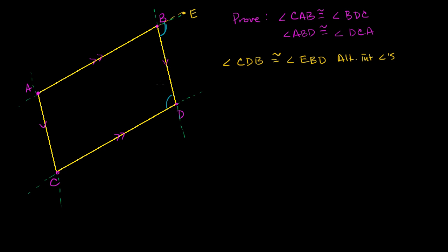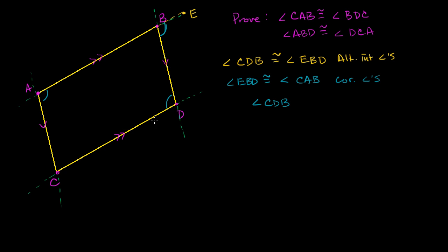Now if we change our thinking a little bit and instead view BD and AC as the parallel lines, and now view AB as the transversal, then we see that angle EBD is going to be congruent to angle BAC because they are corresponding angles. So angle EBD is congruent to angle CAB — they are corresponding angles. Since angle CDB is congruent to angle EBD, and angle EBD is congruent to angle CAB, angle BDC is congruent to angle CAB.